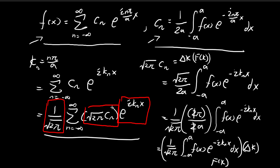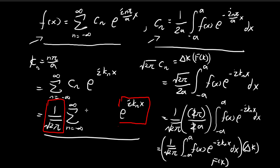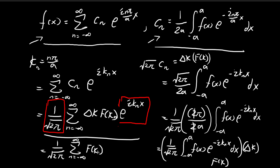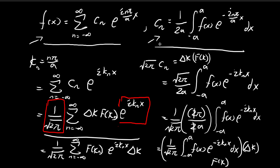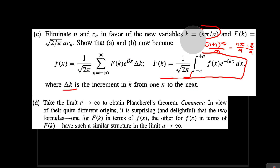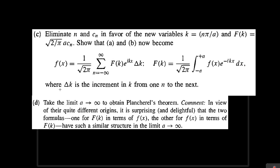So we started with the square root of 2 pi times c_n, and through all these steps, proved it equals delta k times f of k. What this means is that in the original summation expression, I can replace the square root of 2 pi times c_n with delta k times f of k. With a bit of rearranging, you can see this is exactly equal to the expression that Griffiths gives us. So we've verified that from the expressions in part a and part b, we can indeed arrive at this conclusion — f of x can be expressed using this alternative form.